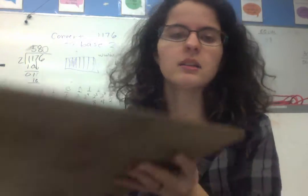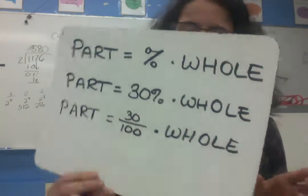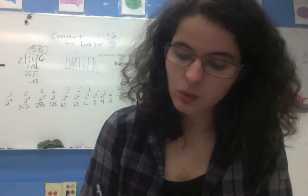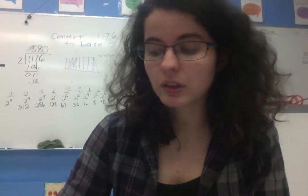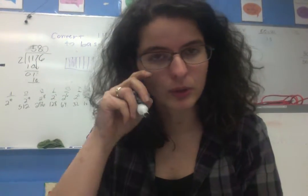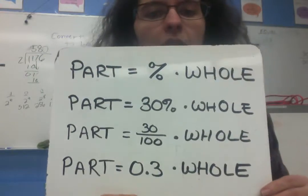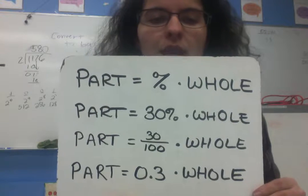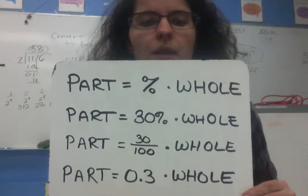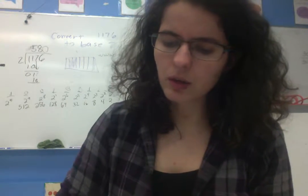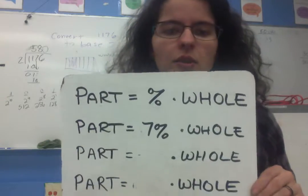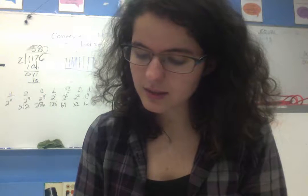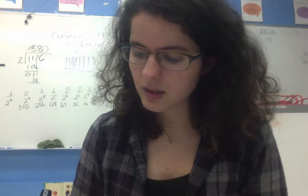You can also write a percent or a fraction as a decimal, and that is especially useful if you're going to be putting something into the calculator. In that case, we would have this 3 tenths or 30 hundredths. Let's talk about 7%. If we have 7%, then you could write that as 7 hundredths, and that would be the same as 0.07.